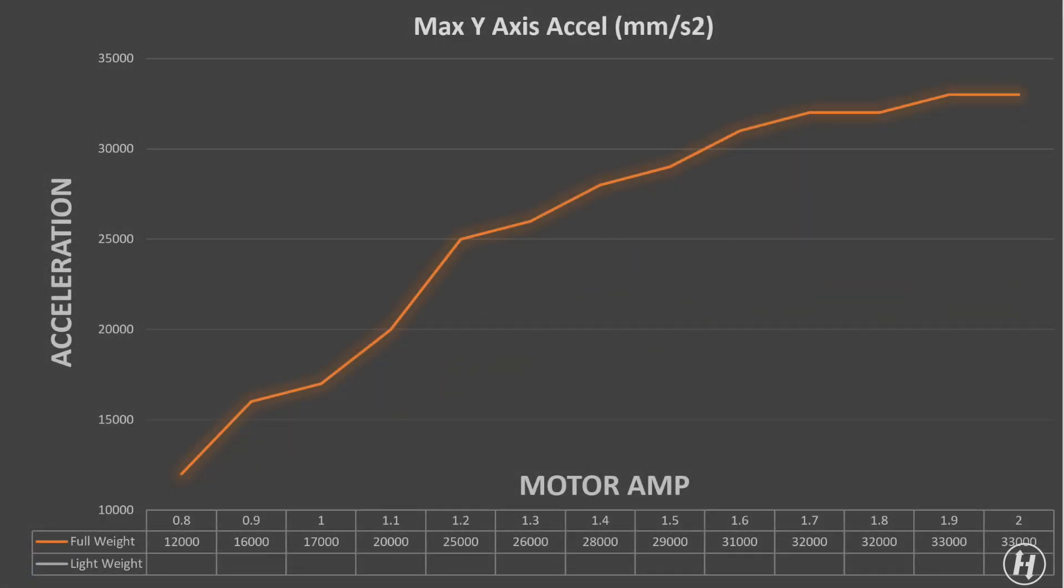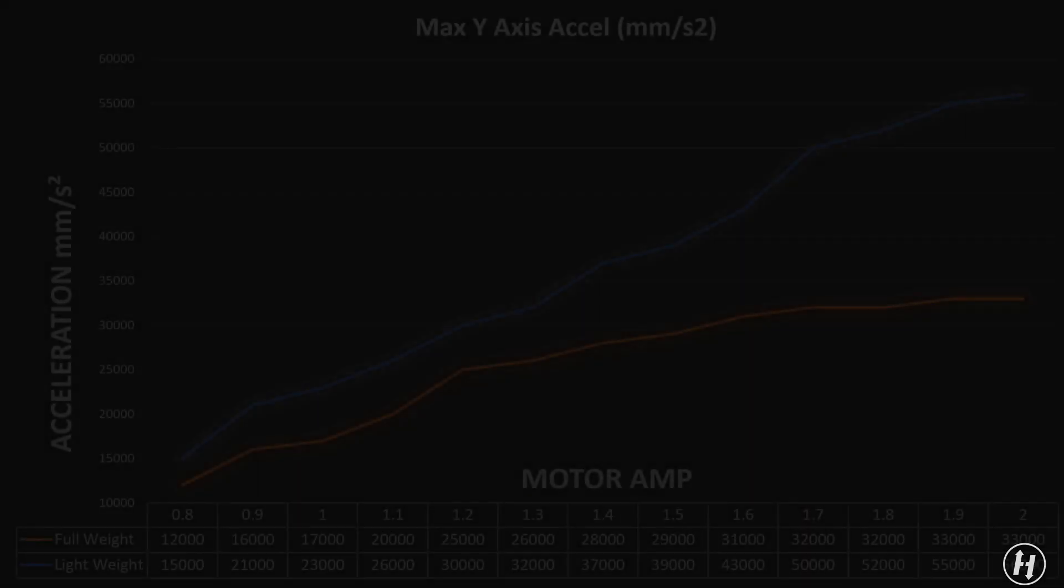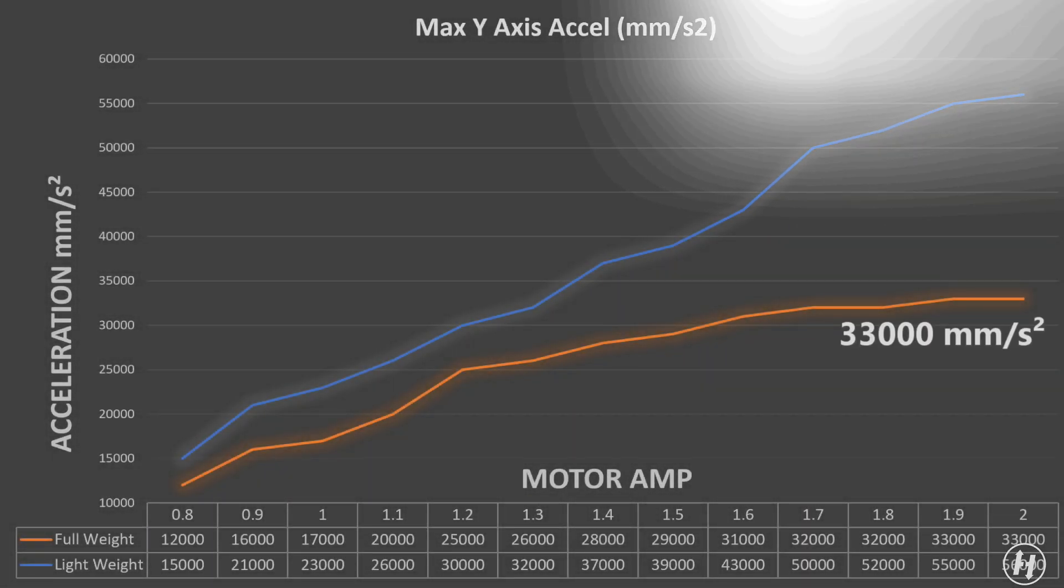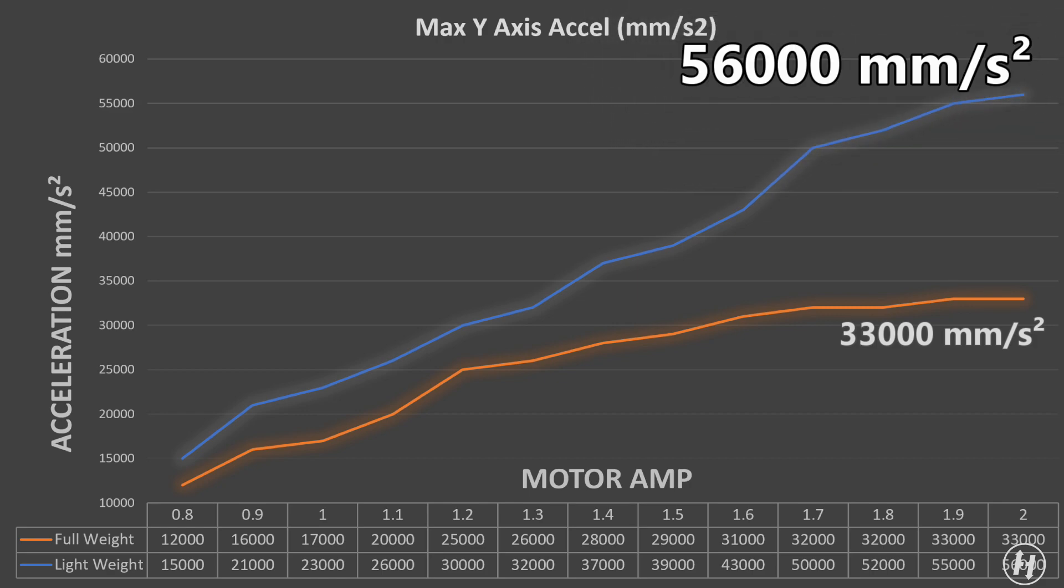Are you ready? Well, hold on. Let's just bring back the previous chart so we have it fresh in our memory. Okay, you got this now? Ready? Well, here it is: an impressive 56,000mm per second squared of maximum Y-axis acceleration before the motor skip steps.